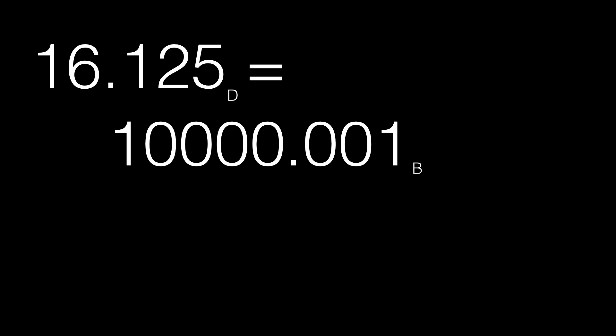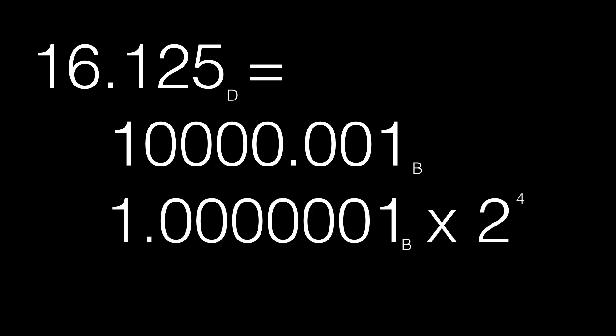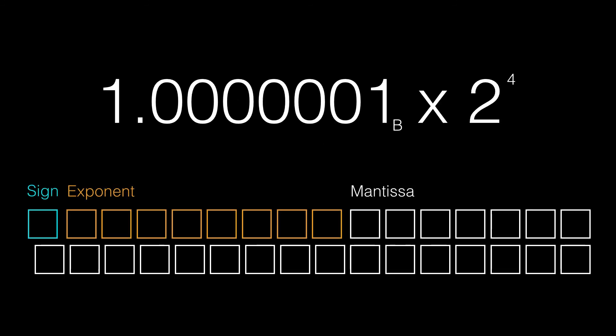That makes the binary number 10000.001. To represent that in our scientific notation, we have 1.0000001 binary times 2 to the fourth. So, now we have to place this all in our floating point bits. The sign is positive, so that's zero. Zero goes into the 32nd bit. The exponent is four. Now, remember, we need to bias this number, so that makes our exponent 127 plus four, or 131. We store 131 into bits 24 through 31. And that's this number.